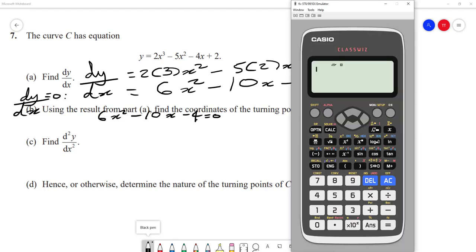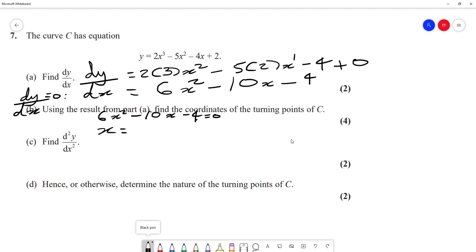We press the menu button, alpha minus. It is a polynomial, a quadratic, so we choose option 2 and type in the coefficients: 6, minus 10, and minus 4. That gives me 2 and minus a third, so x equals 2 and x equals minus a third.